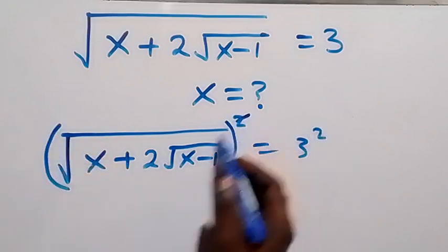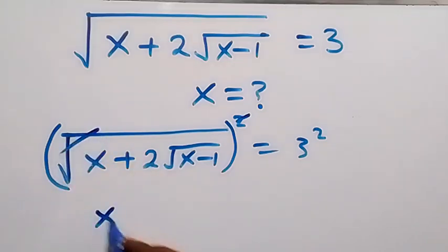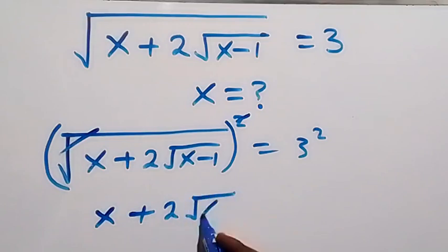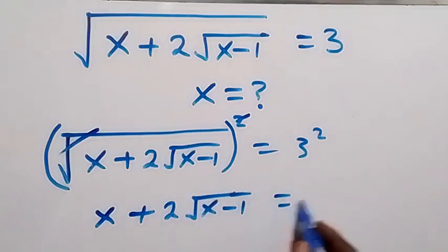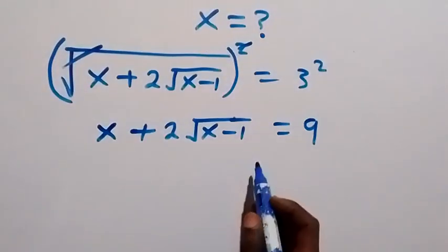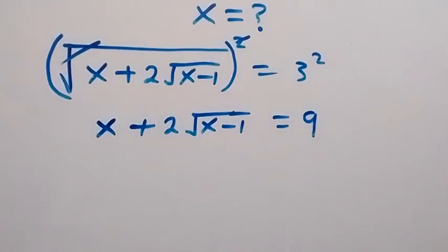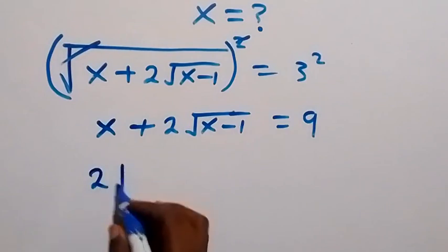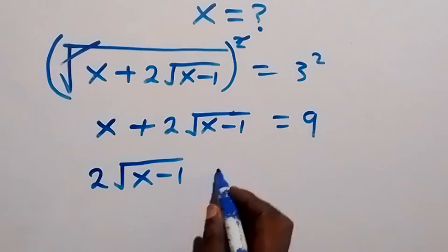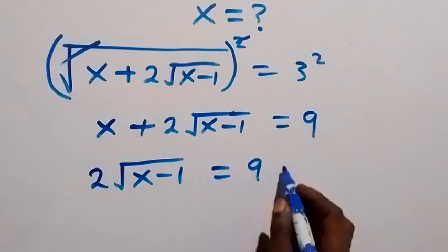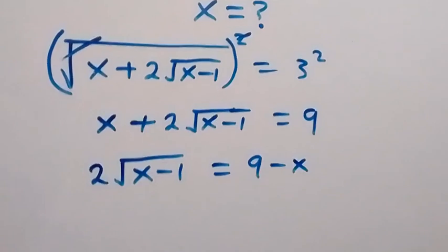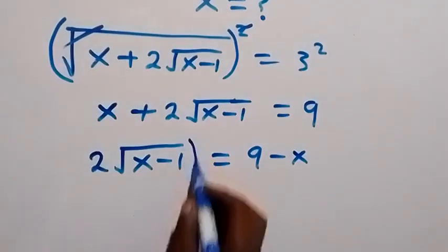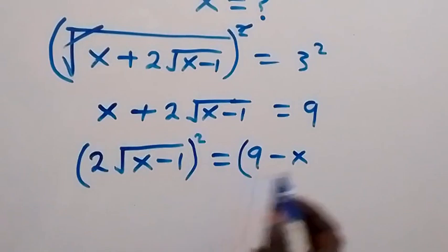We can square both sides. The square removes the square root, giving us x plus 2 root x minus 1 equals 9. Then we take x to the other side, so 2 root x minus 1 equals 9 minus x.